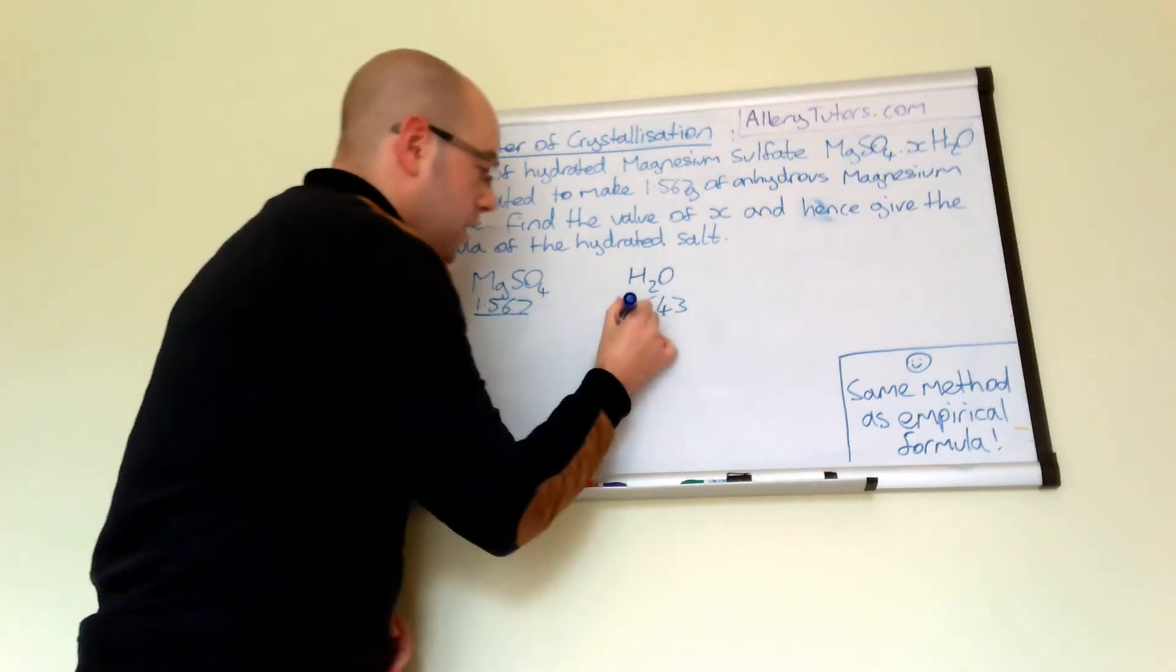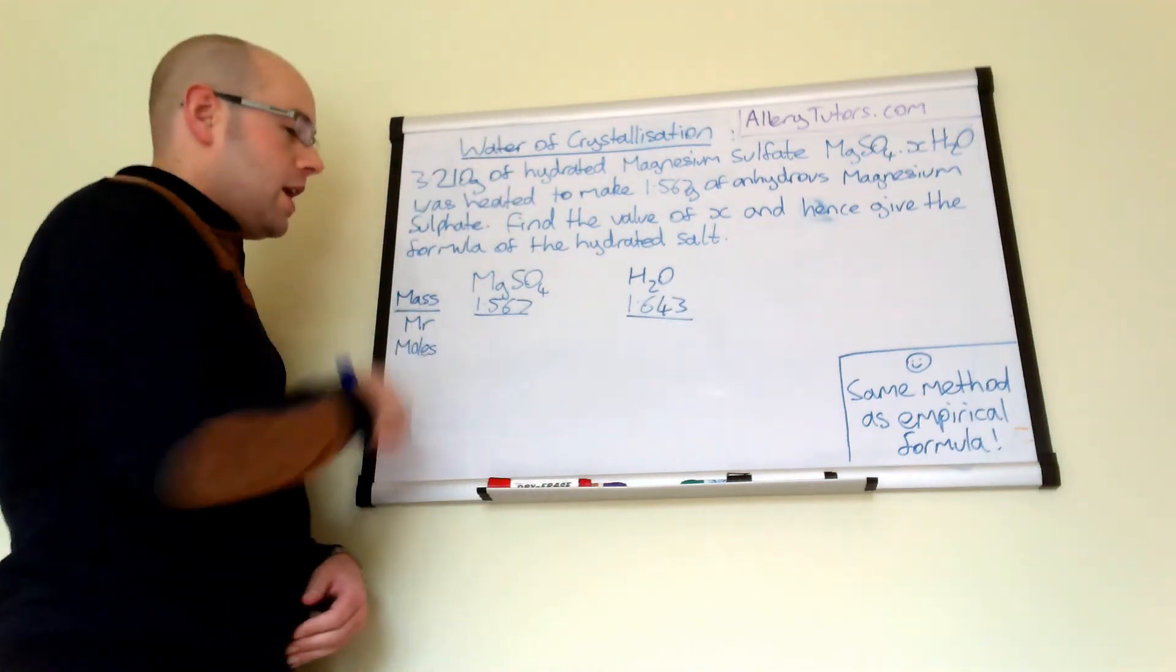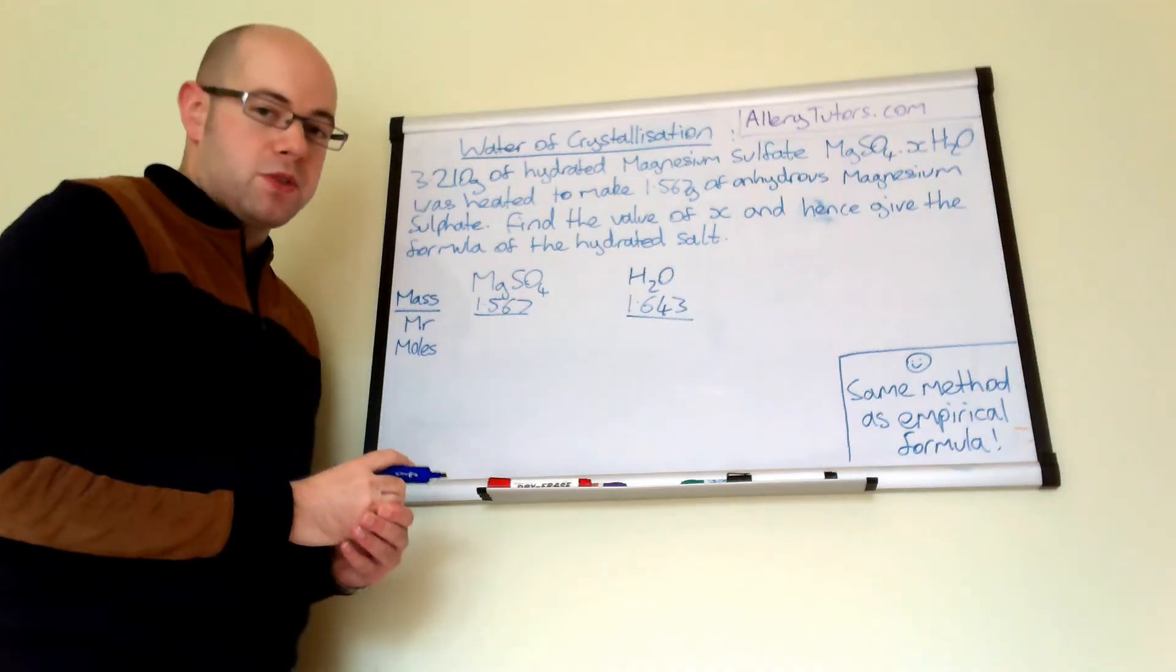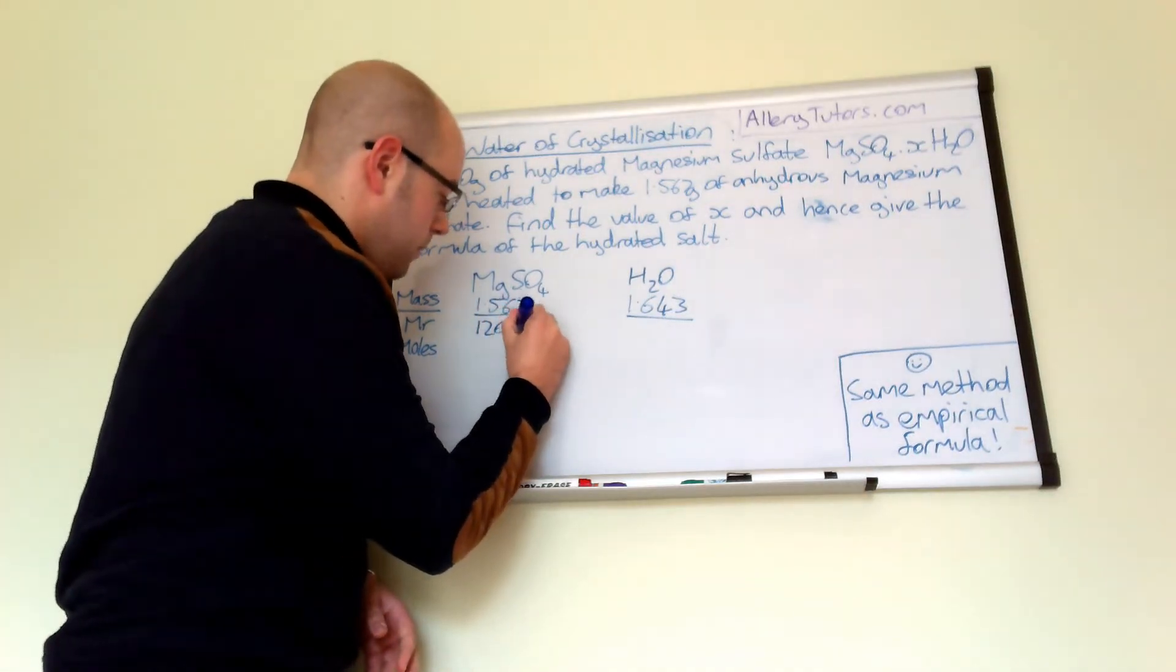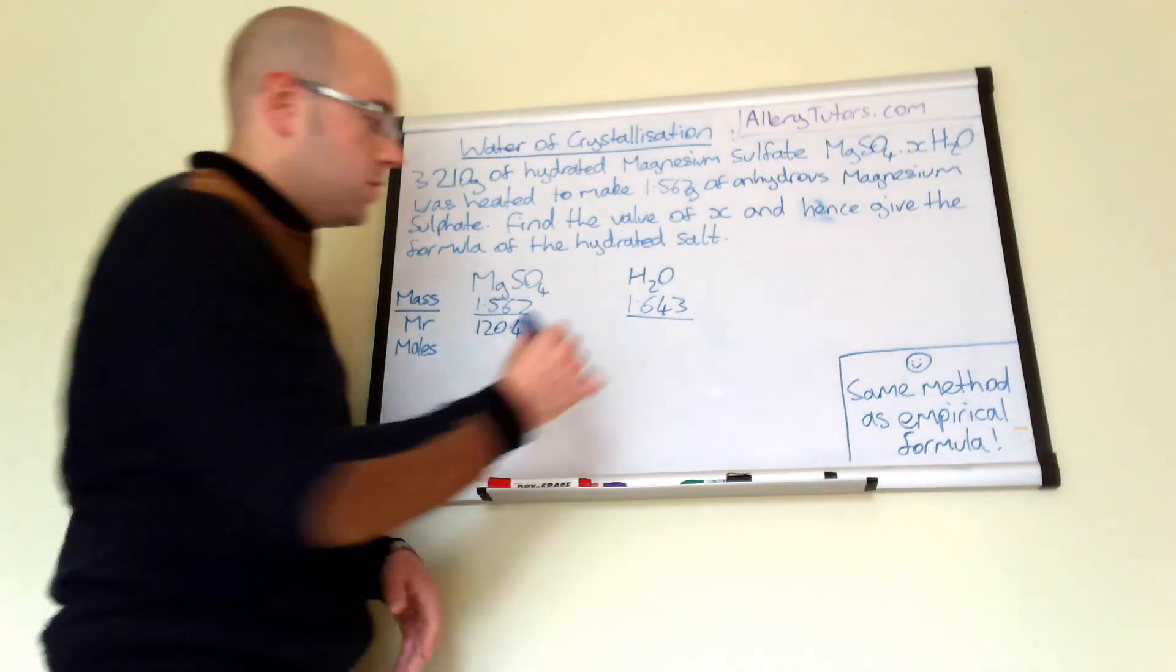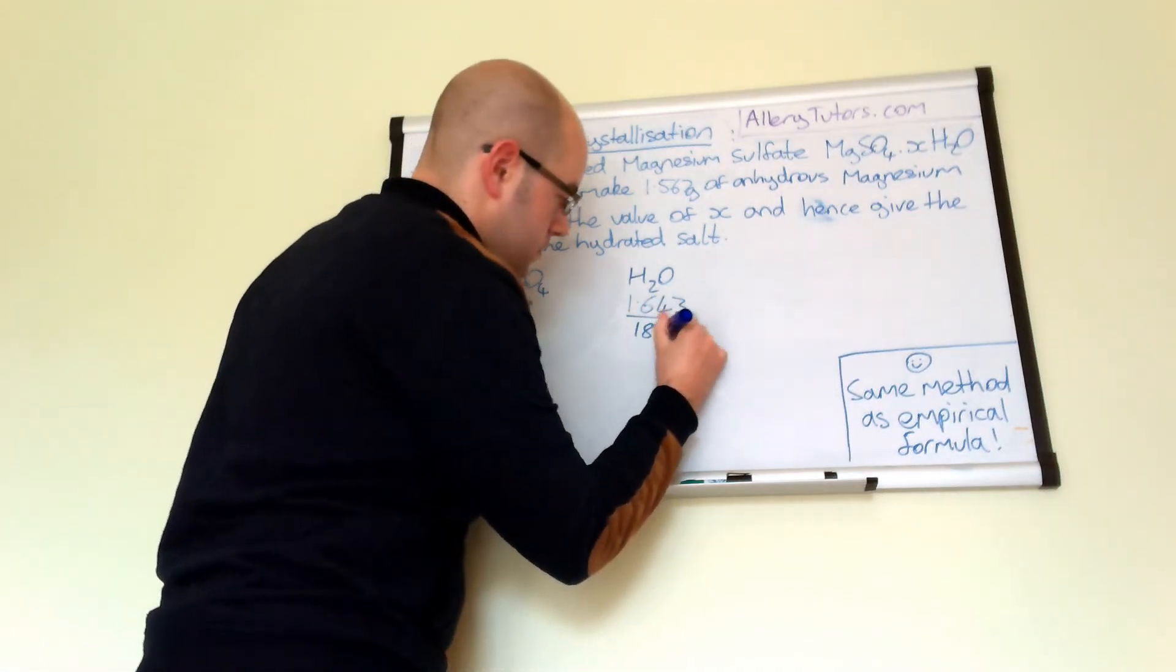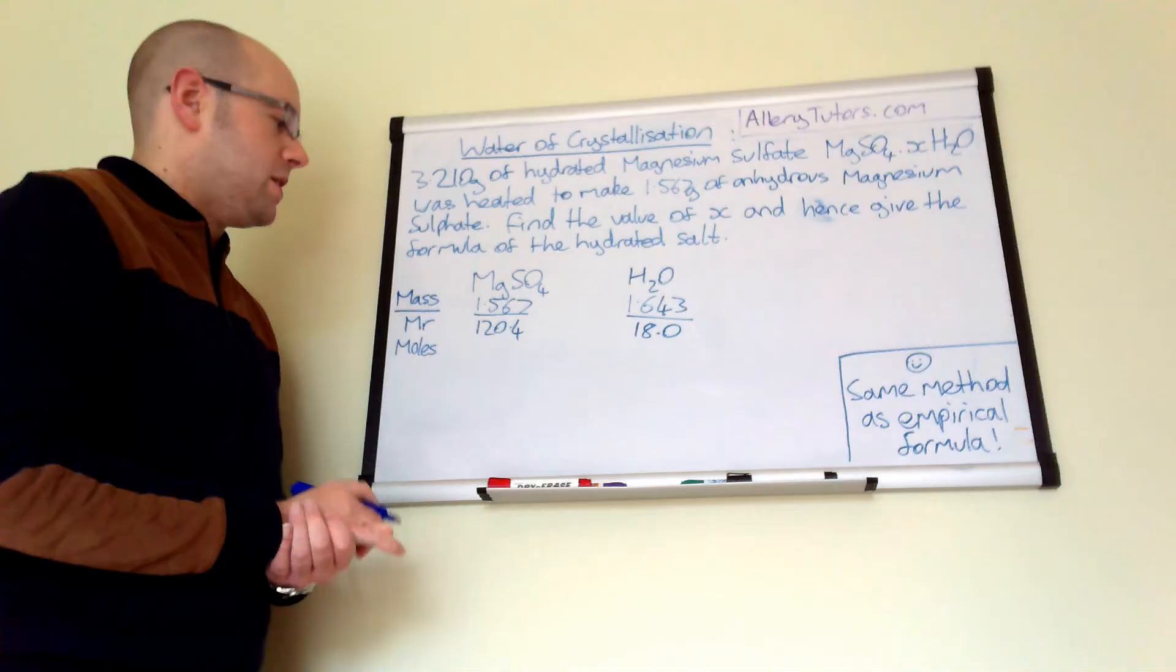Then what you do is you divide both sides by the MR. Now the MR of magnesium sulfate, if you use periodic table, should come out at 120.4. And the mass of water is 18.0. So there's your masses there.